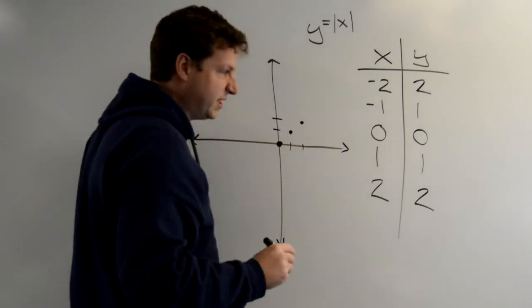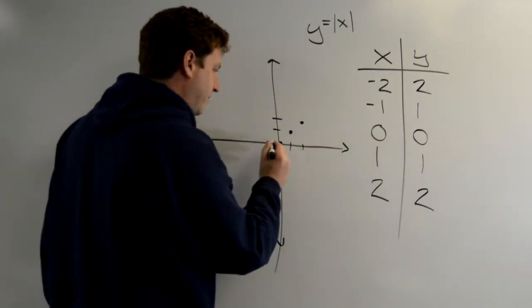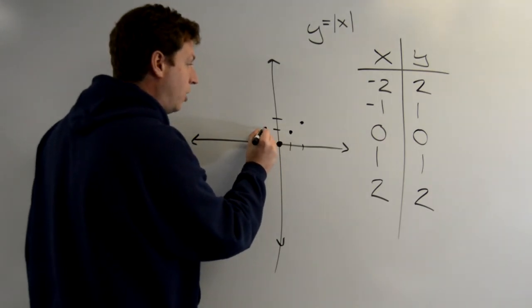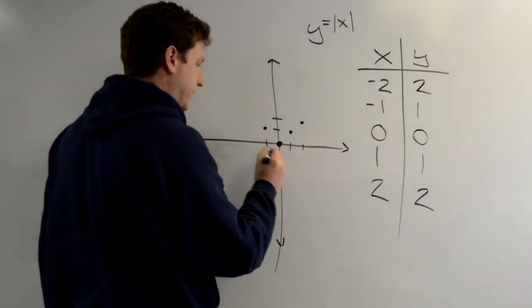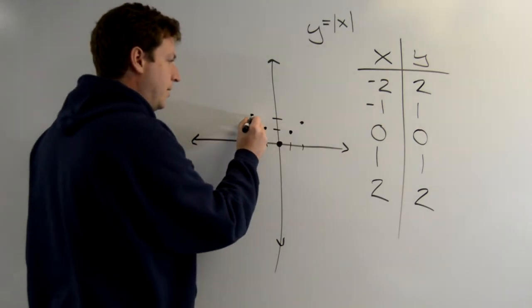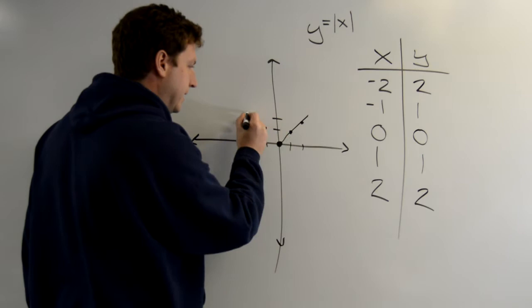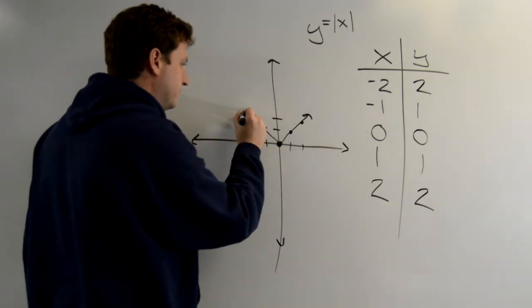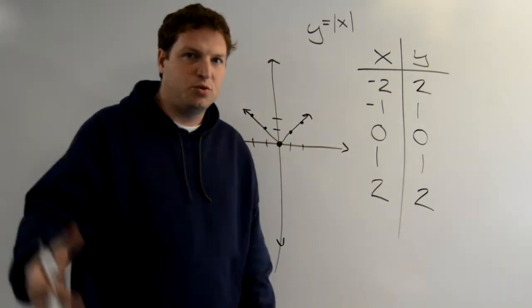Now this is what's interesting. If I go to my negative values where x equals negative 1, y also equals positive 1. When I go to negative 2, y equals a positive 2. And I get this neat little v-shaped structure.